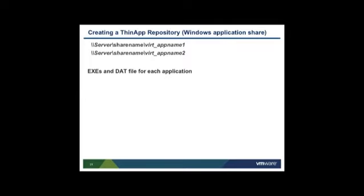The Horizon ThinApp repository, or Windows application share, holds the Horizon-enabled ThinApp packages. The Horizon connector communicates metadata about ThinApp packages on the file share to the Horizon service. You must create the file share and place the packages there before setting up entitlement in Horizon. Each ThinApp package must have its own named folder, structured as: \\server\sharename\virtappname1, \\server\sharename\virtappname2, and so on. Copy the .exe and .dat files from the ThinApp project's bin directory to the named application subfolder. Horizon currently uses only .exe-based virtualized applications.